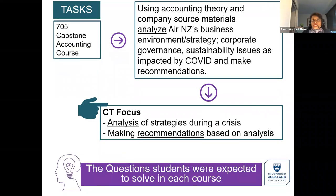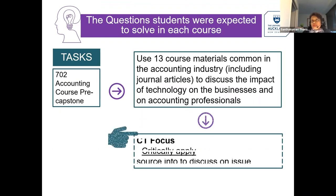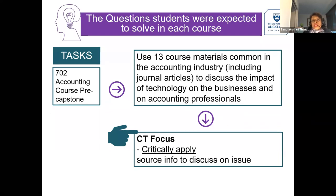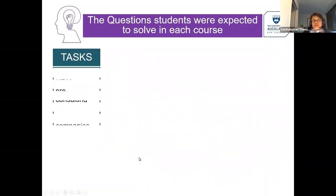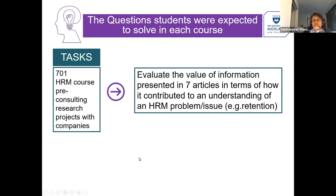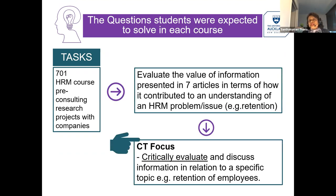In 702, which is a pre-capstone course, the focus was on reading different materials — which is common in the industry — to ask students to critically apply the knowledge to discuss an issue that could come up in the industry. And finally, in the third course 701, students were asked to evaluate some articles to discuss the usefulness of the information to a particular topic related to HRM. This course was a pre-consulting course and therefore very relevant for their final year consulting projects.